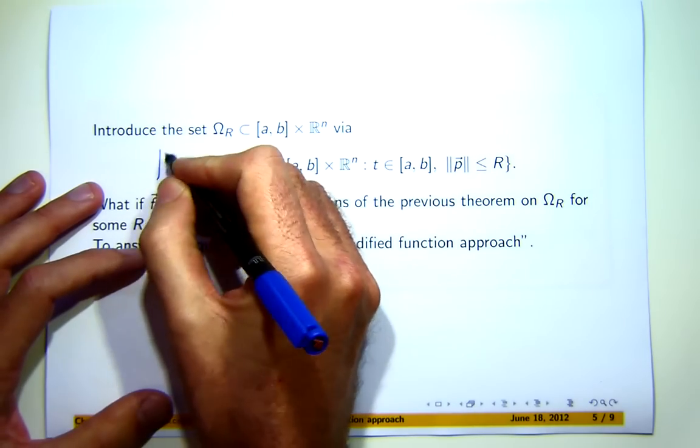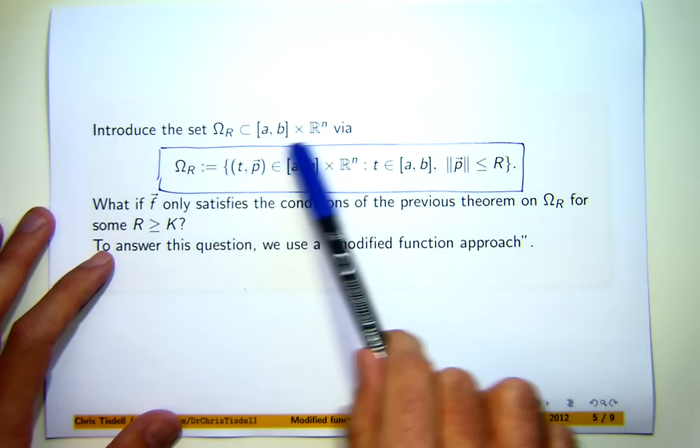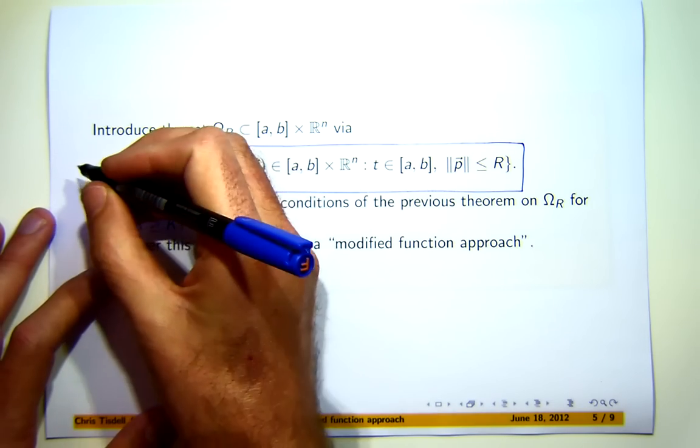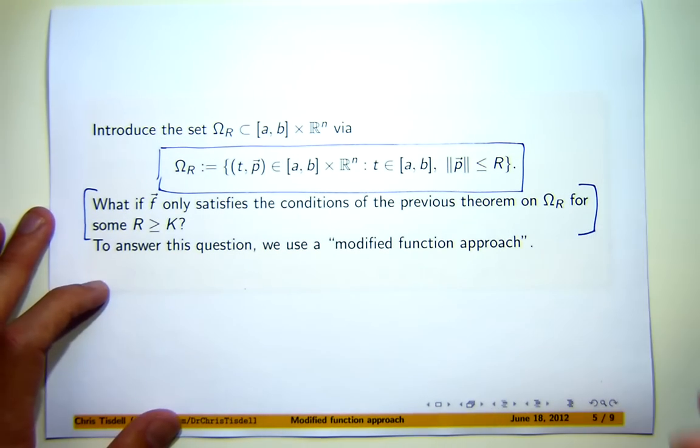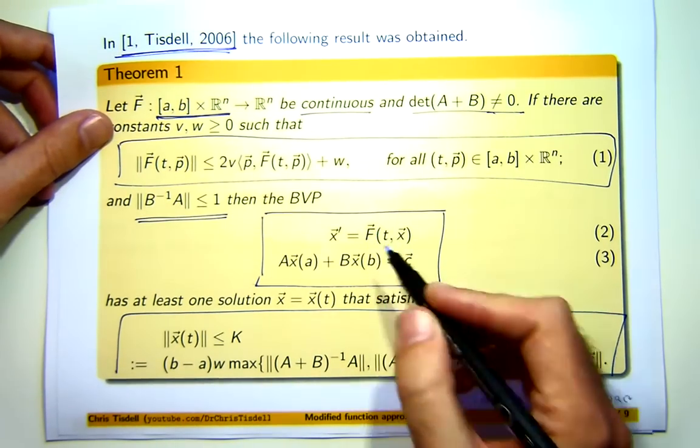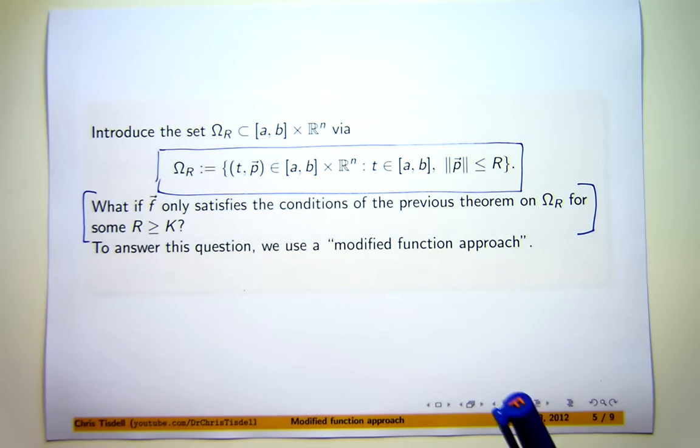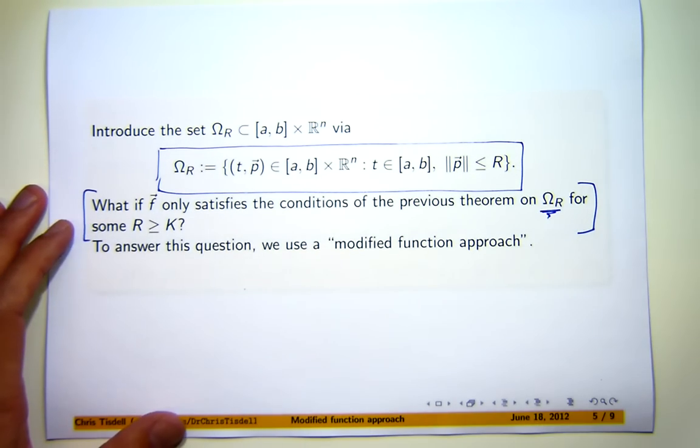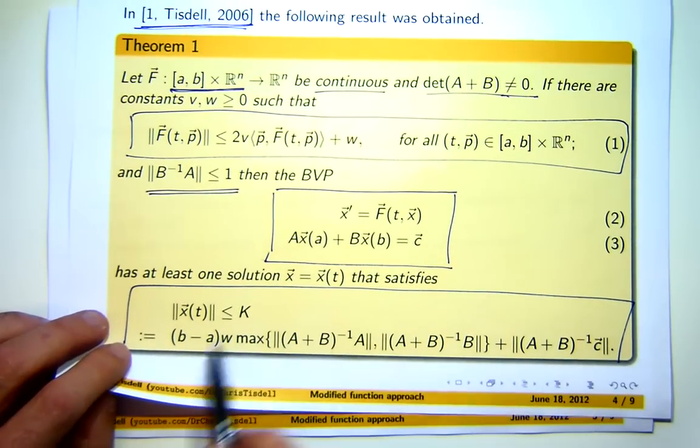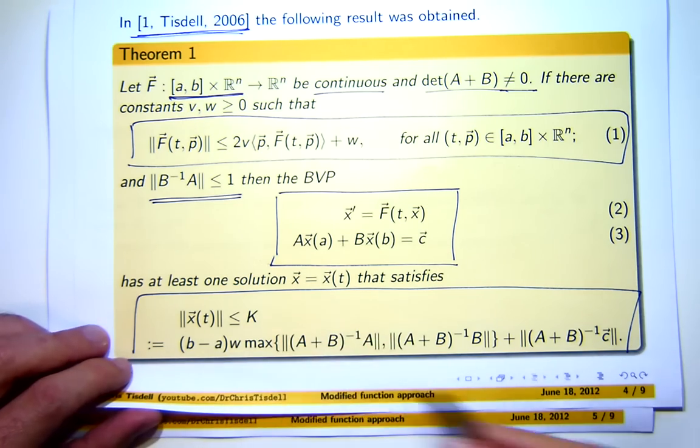Now, suppose that I define a subset of this whole set, omega sub R, by this definition here. The main question that we're going to look at in this presentation is the following. Suppose I have another boundary value problem, just with little f-bar instead of big F-bar here on the right-hand side. What if that little f-bar only satisfies the conditions of theorem one on this smaller set, where R's some number that's greater than or equal to this K? So, whenever we see R in this presentation, it's always assumed to be greater than or equal to this number K.